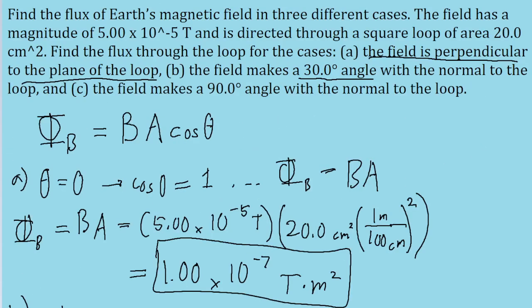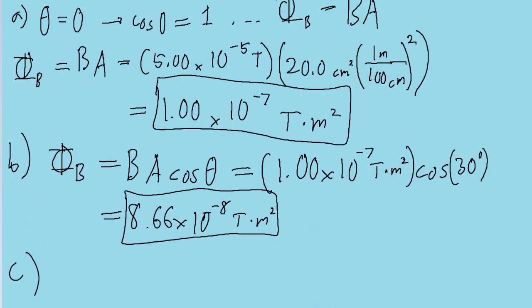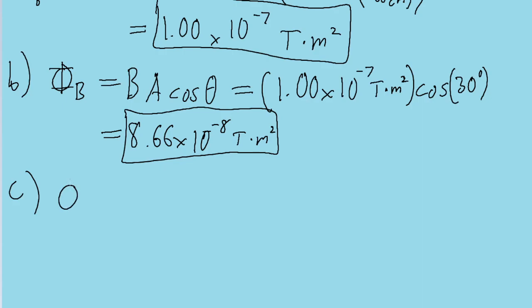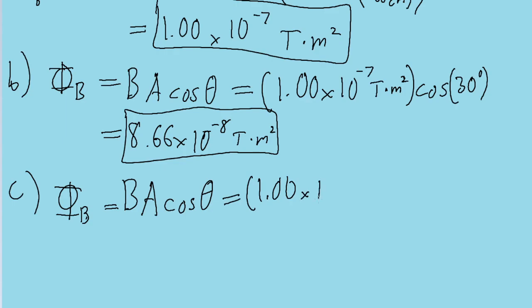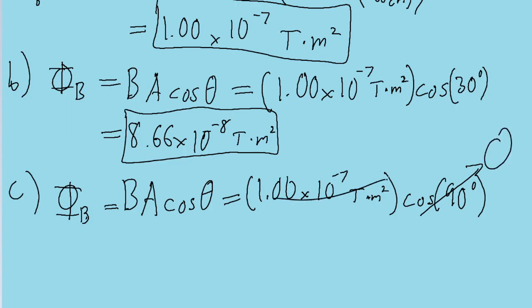Finally, for Part C, we're told that the angle the field makes with the normal to the loop is 90 degrees. We can again use the same process: Phi sub B equals B·A·cos(theta), which is the same as taking our previous answer of 1.00 times 10 to the negative 7 tesla meters squared and multiplying it by the cosine of 90 degrees. Now, if you're wise, you might have noticed that the cosine of 90 degrees is always zero. So the entire term goes to zero, and the magnetic flux through the loop in Part C is just zero tesla meters squared — there's going to be no flux whatsoever.